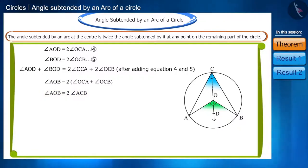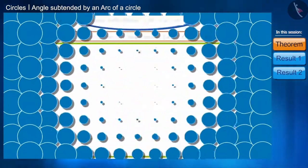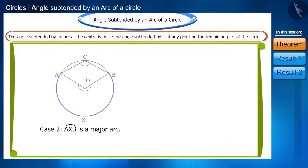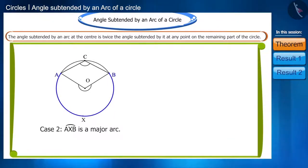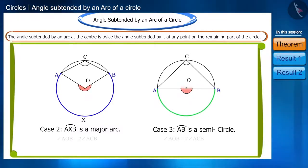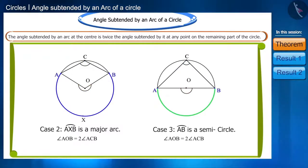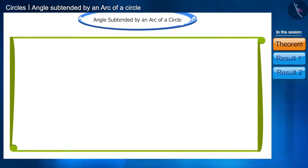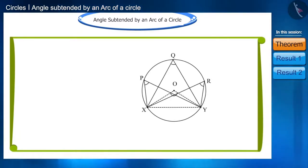Friends, we can repeat this process for the second case as well, where angle AOB is the reflex angle, and for the third case, where angle AOB is the straight angle. In all cases, you will find that angle AOB is twice the angle ACB.